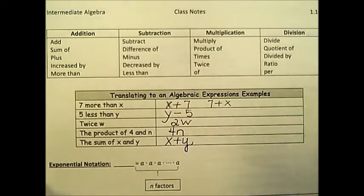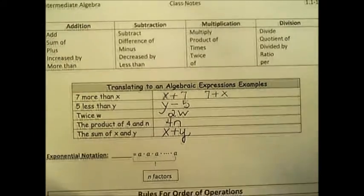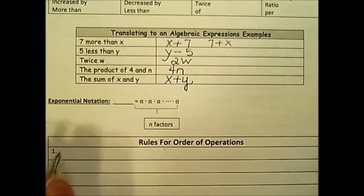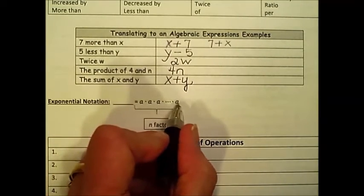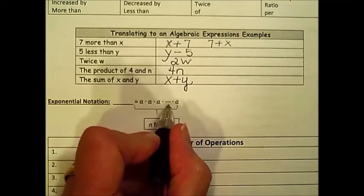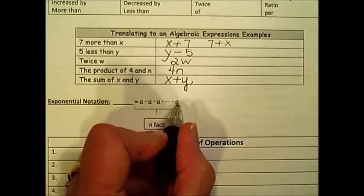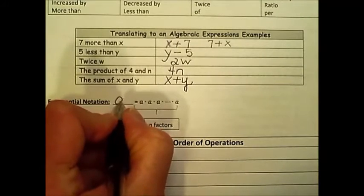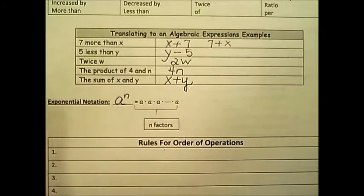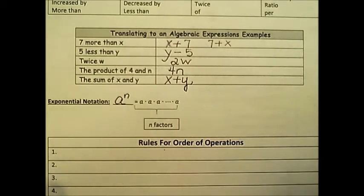Mathematicians are basically lazy, and so we go to exponential notation. And here we have a times a times a times a, a continuing practice of multiplication of a's. There are n factors. This in exponential notation would be a to the nth power.